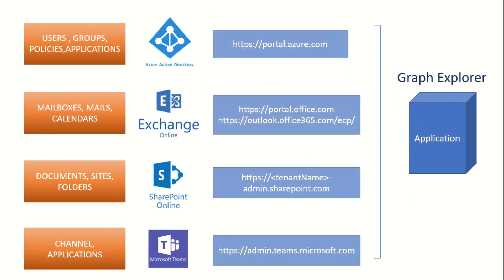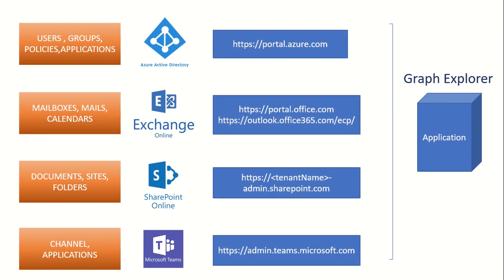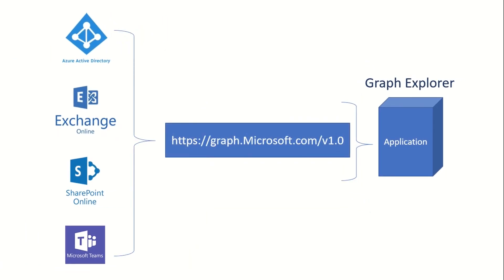When we talk about the admin perspective of managing all these services, there are different consoles which you can use to manage each of these individual services. But that's not how things work with Graph, because Graph is a single API exposed by Microsoft to access any information that belongs to these services. So what we will be doing is we will be using Graph Explorer to access one single API which is graph.microsoft.com/v1.0 with the respective address of a specific entity type or object type, and then we will get the respective information.